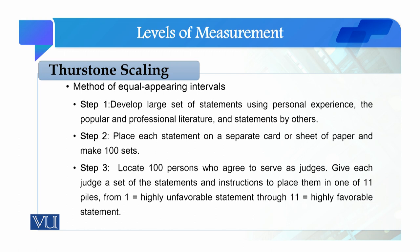The first step is identifying the variable under study. We develop a large set of statements by using personal experience, popular and professional literature, and statements by others. For example, if you have the opinion towards death penalty, you draw on your personal experience, the academic literature available, and other scales available. On this basis, we have a pool of statements to measure opinion towards death penalty, and those statements could be more than 80 to 100 or 120.